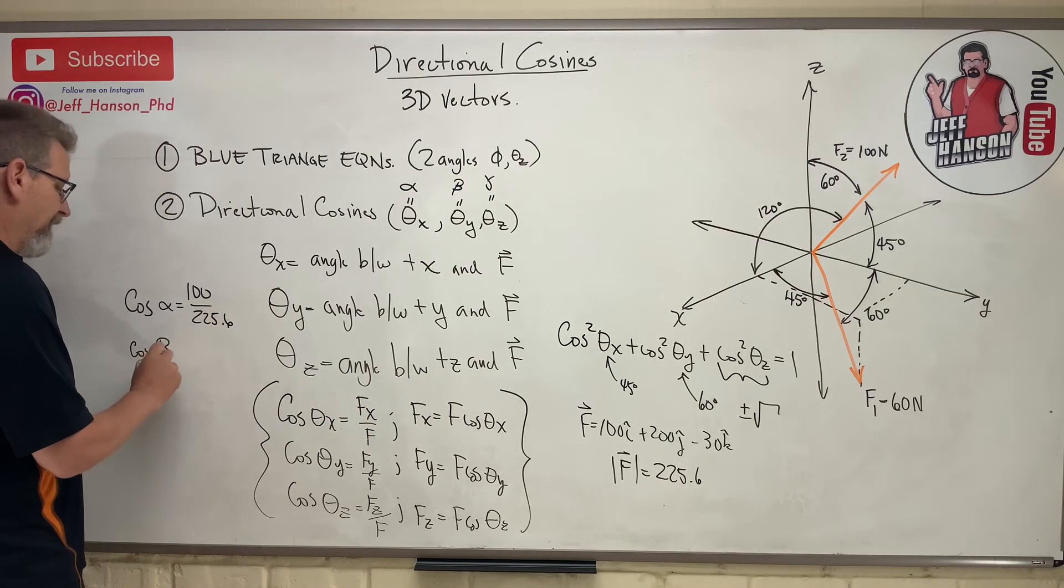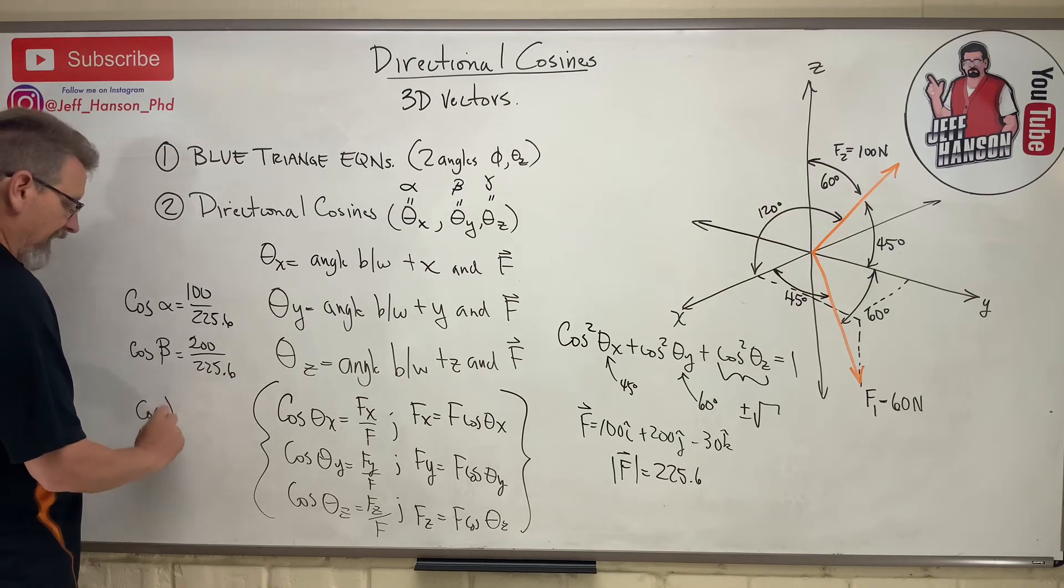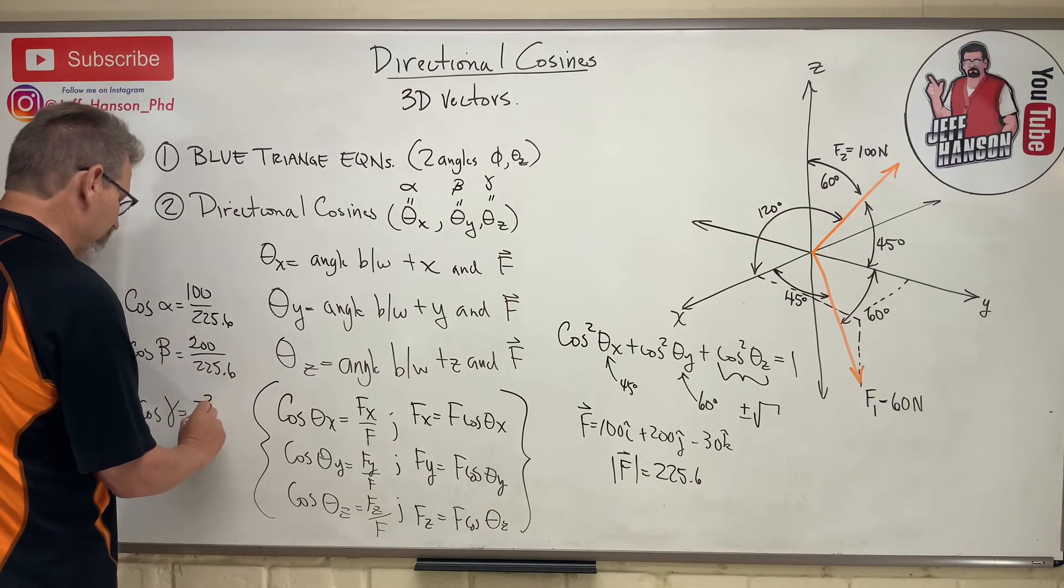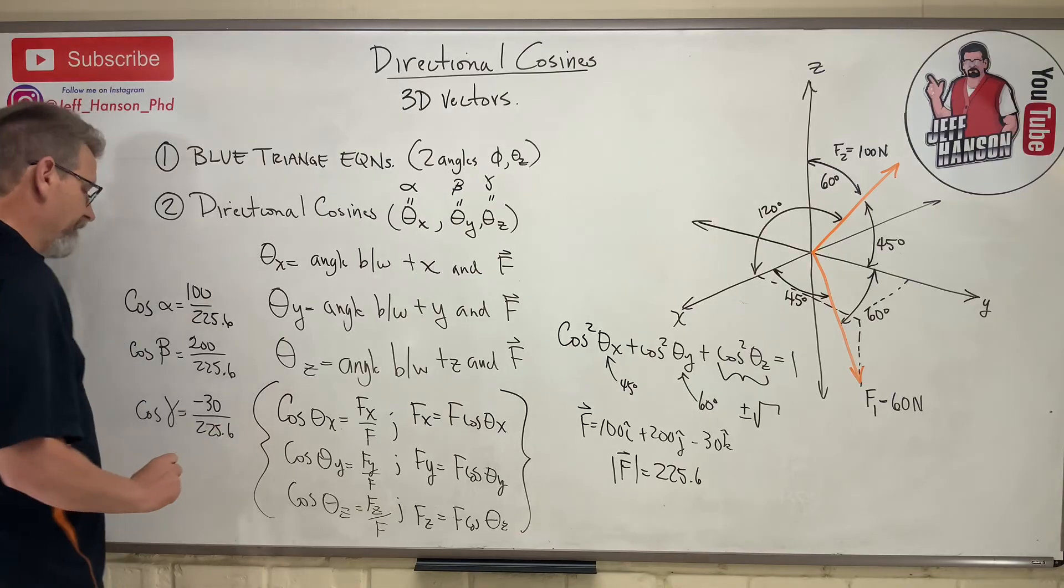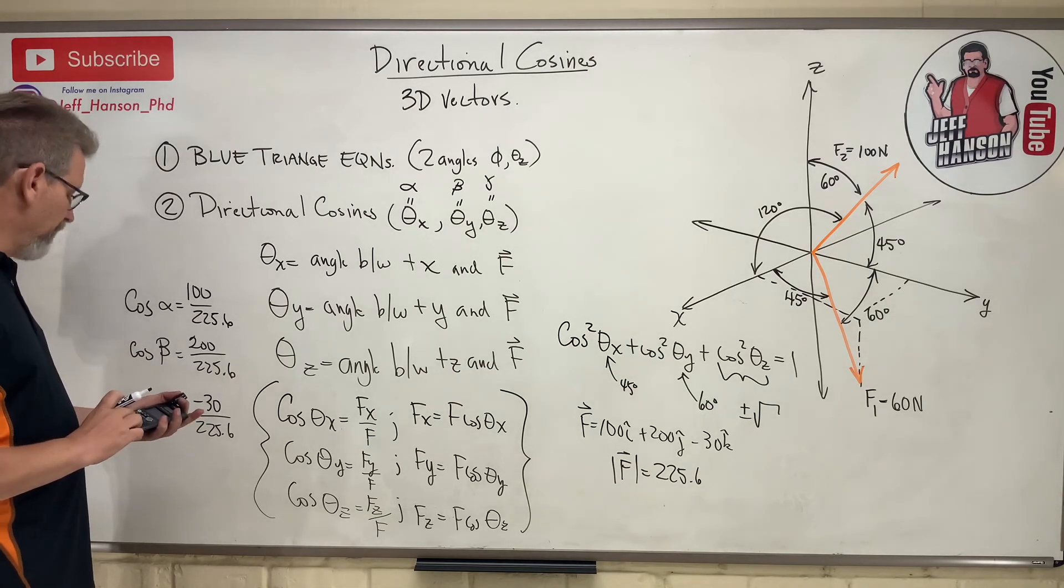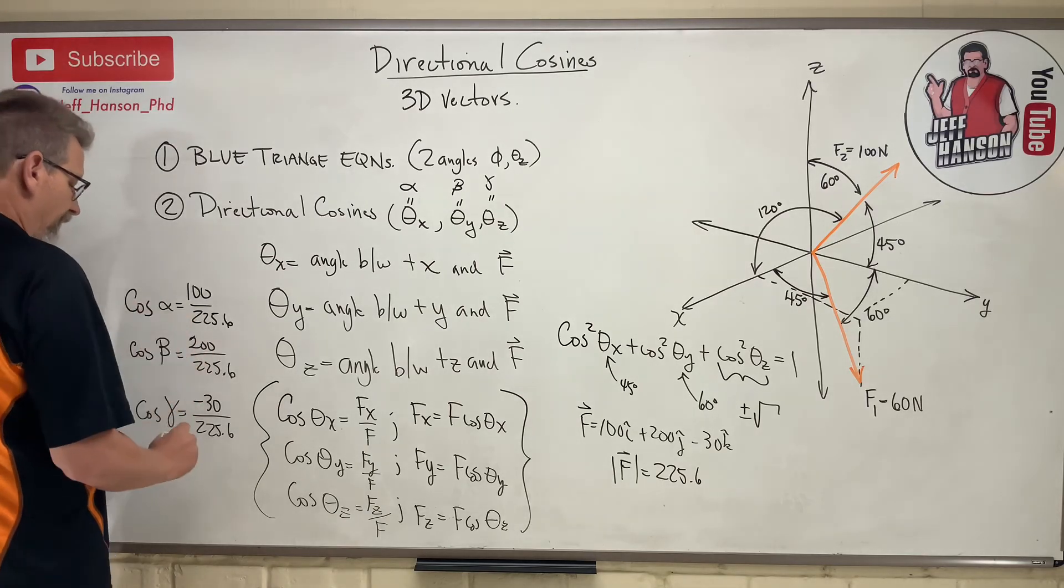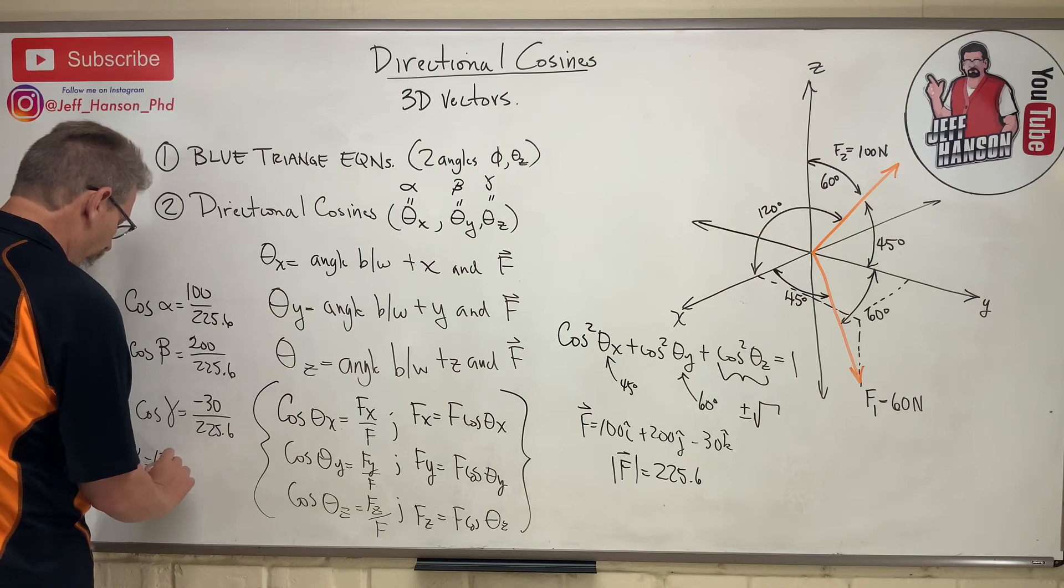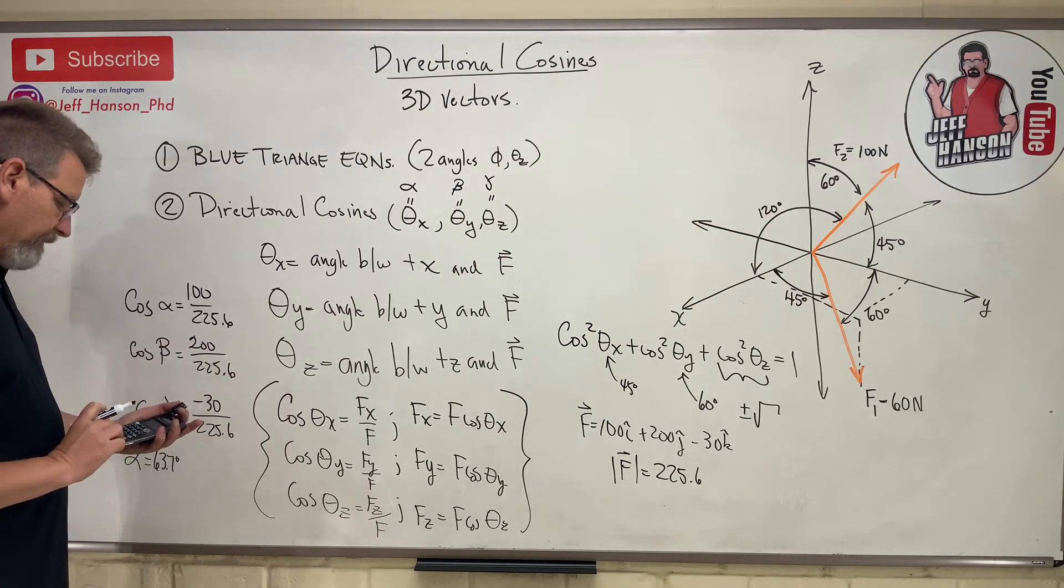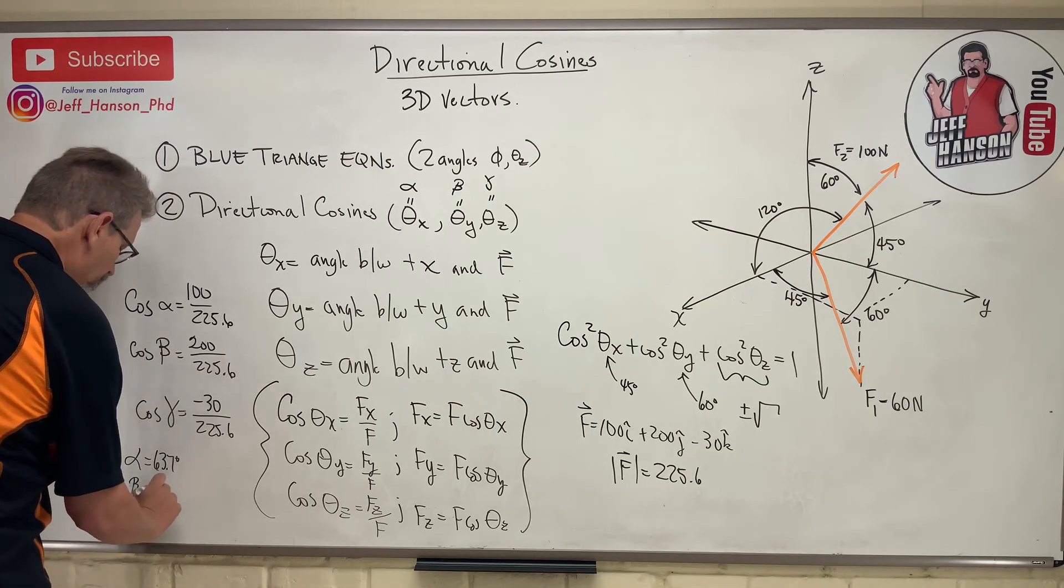Cosine of beta is equal to 200 over 225.6, and cosine of gamma, my students call gamma dead fish, is negative 30, the signs matter, over 225.6. So all I got to do is put this in my calculator. 100 divided by 225.6 equals, and then inverse cosine of the answer equals 63.7 degrees. So alpha equals 63.7 degrees. Beta, 200 divided by 225.6 is 0.886 inverse cosine. That guy is 27.56. Beta, 27.56.